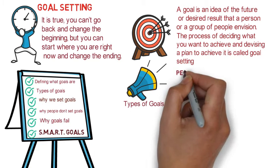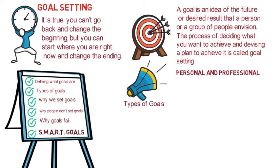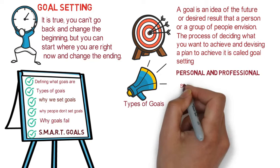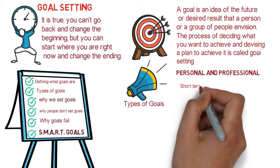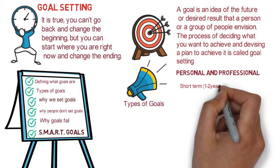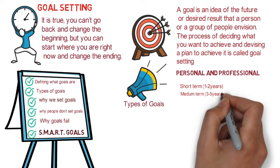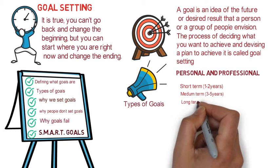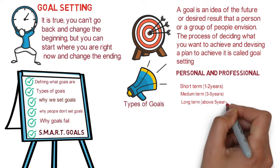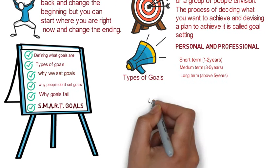Now, there are different types of goals which can be categorized as personal and professional goals. This can further be subdivided into short-term goals, which are usually within the period of one to two years, medium-term goals, which are between the period of three to five years, and long-term goals, which are usually above five years.